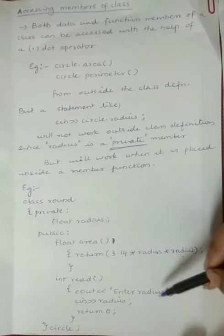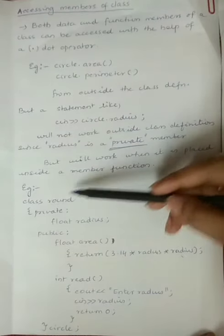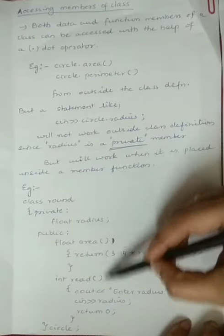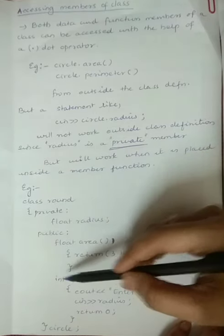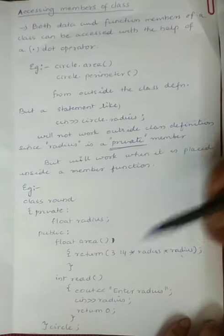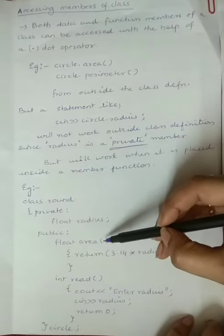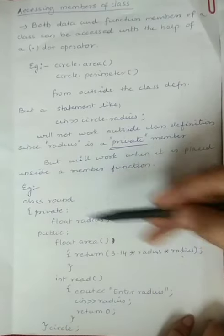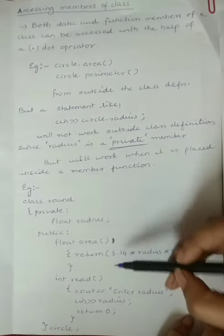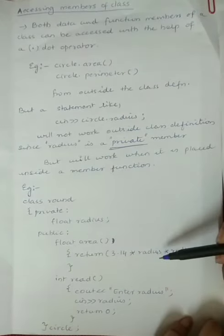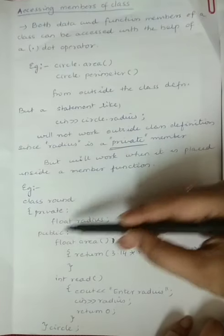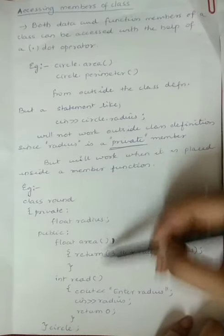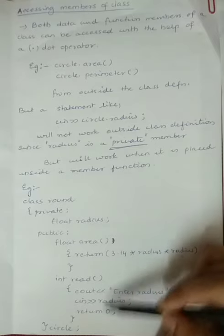In this example for class `round`, I have defined two functions: `float area` and `int read` inside the class. The definitions are written directly inside the class — `float area` is made public and returns the answer. Similarly, the `read` function definition is also written inside the class.